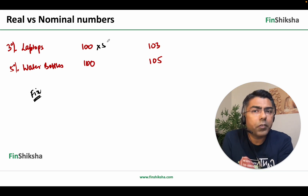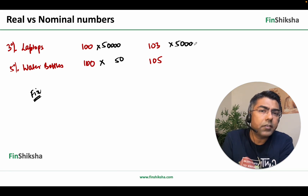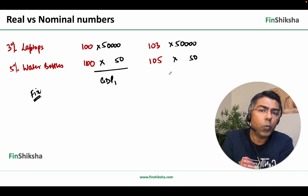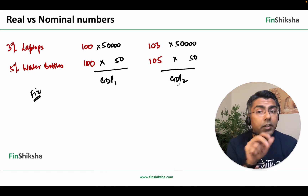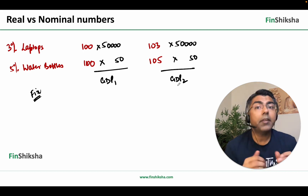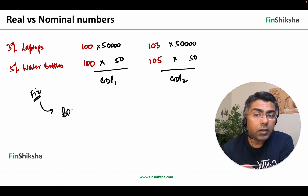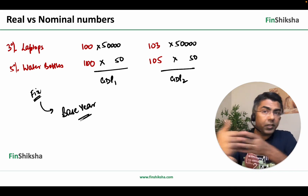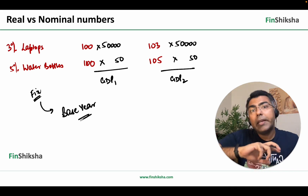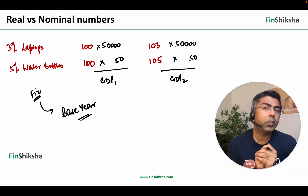Let's assume a laptop was worth 50,000 rupees and a water bottle was worth 50 rupees. If you fix the price in both cases, this is GDP for year 1 and this is GDP for year 2. Once you have fixed the price, the difference is your real GDP growth — that is how you calculate real GDP growth. The year in which we fix the price is known as the base year, where you take the output prices and multiply each year's output with the price in that base year to arrive at an estimate of real GDP.